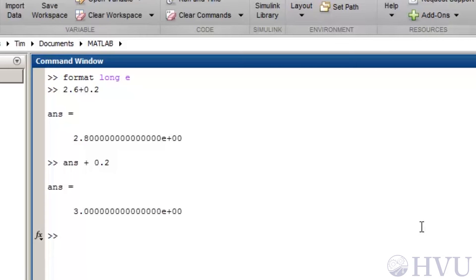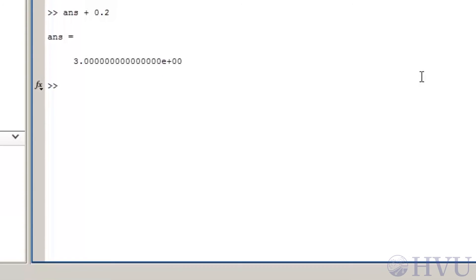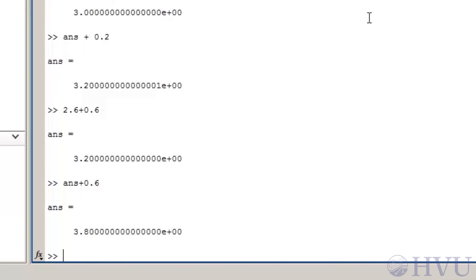But now, if I add 0.2 to ANS again, I get 3.2, then a bunch of zeros, and a 1. MATLAB's accumulated enough error to become noticeable in just three additions. The round-off error is dependent upon the particular numbers being used. If I add 2.6 plus 0.6, I get 3.2. Adding 0.6 to that result gives 3.8. Repeating the process gives 4.4.